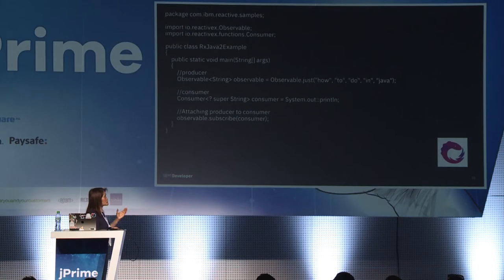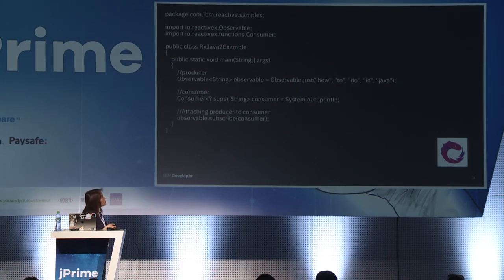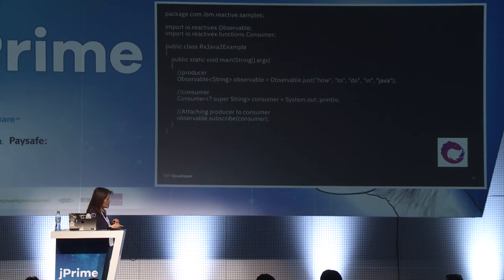To show how you attach a producer to a consumer in RxJava: your Observable does .just with your list of input events. Your consumer does System.out.println. To attach them together, you do Observable.subscribe and pass in your consumer. That's how you do it.